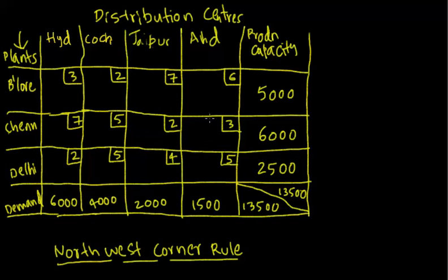Today I will demonstrate the Northwest corner rule in transportation problems. I have taken a problem from Anderson Sweeney, with the names of places changed. I have taken distribution centers at Hyderabad, Kuchin, Jaipur, and Ahmedabad, and manufacturing plants which supply to these distribution centers at Bangalore, Chennai, and Delhi.